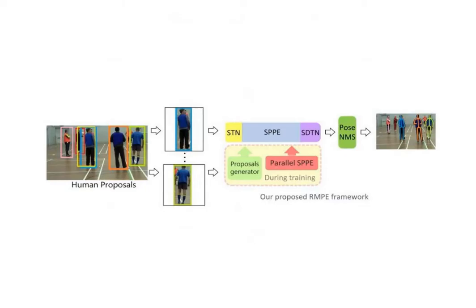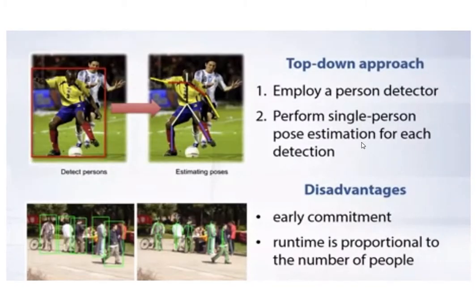In the top-down approach, first we detect the human, crop that human, apply our algorithm to estimate the points, and then do the same for the second human. This approach first runs a person detector, then performs pose estimation on that single person. However, this has a disadvantage: if there are five people in the image, it will do pose estimation for all five people sequentially, making it more time-consuming than the bottom-up approach.